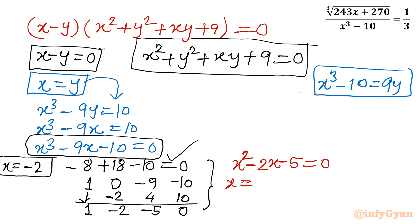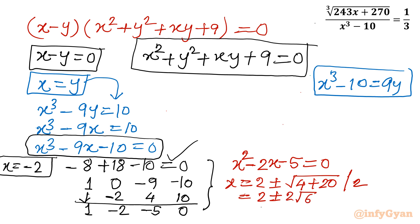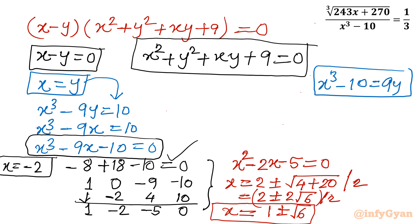Applying the quadratic formula to x² - 2x - 5 = 0: x = (2 ± √(4 + 20)) / 2 = (2 ± √24) / 2. Since √24 = 2√6, this simplifies to x = 1 ± √6. These values are not in the excluded list (cube root of 10), so we have three valid solutions: x = -2 and x = 1 ± √6.